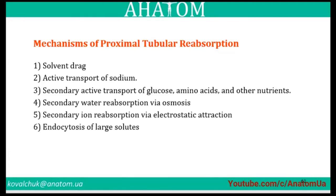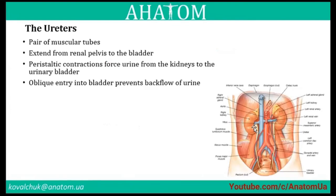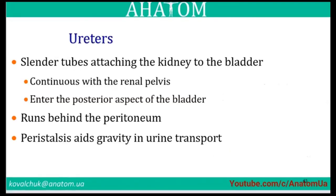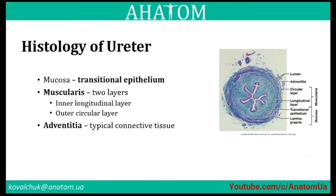The ureters are paired muscular tubes that extend from the renal pelvis to the bladder. Peristaltic contractions force urine from the kidney to the urinary bladder. The oblique entry into the bladder prevents backflow of urine. The ureters run behind the peritoneum, and gravity assists in urine transport. The histology of the ureter in cross-section shows transitional epithelium, two muscle layers (inner and outer), and adventitia of typical connective tissue.